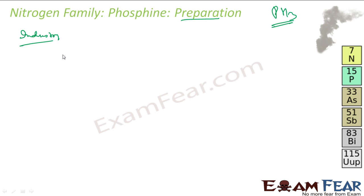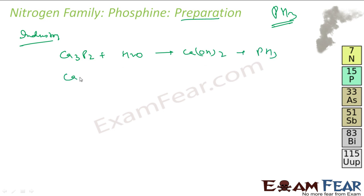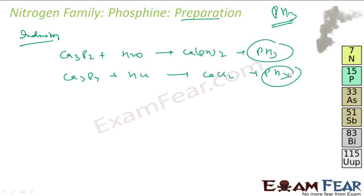In the industrial preparation, we use Calcium Phosphide and water to get Ca(OH)2 and PH3. Instead of water, we can also use Hydrochloric Acid, in which case we get CaCl2 and PH3. These products are impure Phosphine.